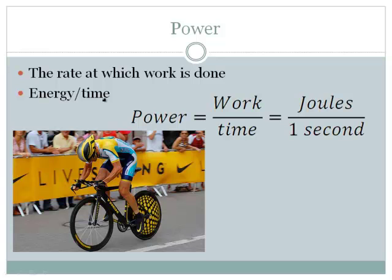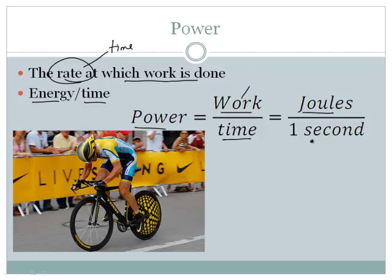Now, power is something different. The rate at which work is done. When we say rate, rate always has some kind of time component. So it's basically the energy divided by the time. Power is the work divided by time. Work is a measure of energy. So it's joules divided by seconds. I have a picture of Lance Armstrong down here, who is a famous cyclist. He is doing a lot of work. But what makes him a better cyclist than others is he can do the same amount of work they can in a lesser period of time. So he has more power than somebody else.